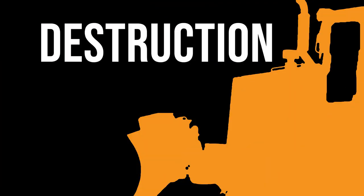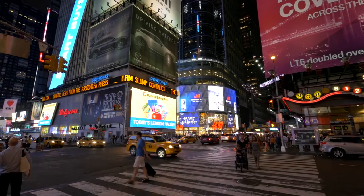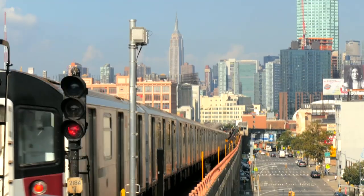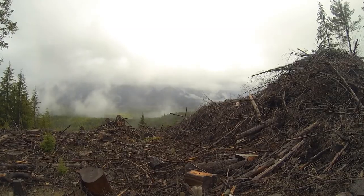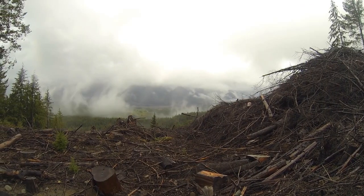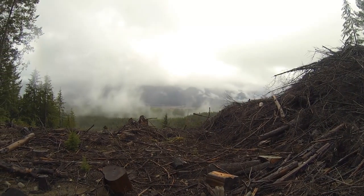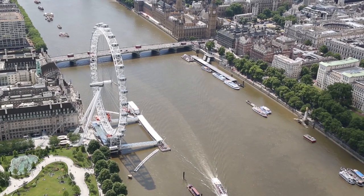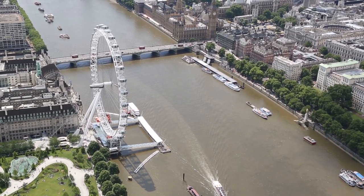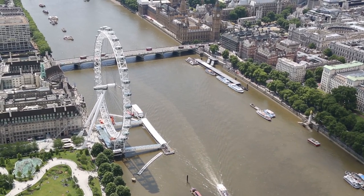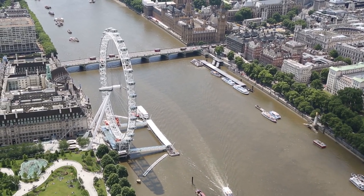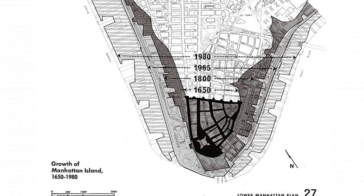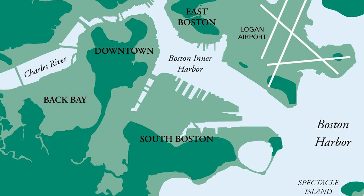The razing of habitats is easiest to see. Towns and cities decimate the habitat they rest on. Forests are completely cleared for agriculture. Even water resources can be completely transformed by land reclamation, seen in places like New York City or Boston.